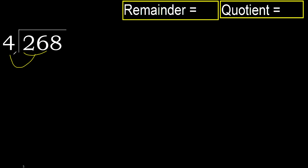26 is not less, therefore with 26 and 4 — multiply by which number is nearest to 26 but not greater. 4 multiply by 7 is greater, multiply by 6: 24 is not greater. Ok, 26 minus 24.